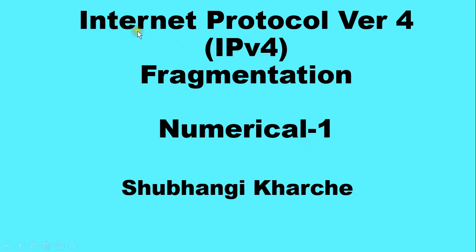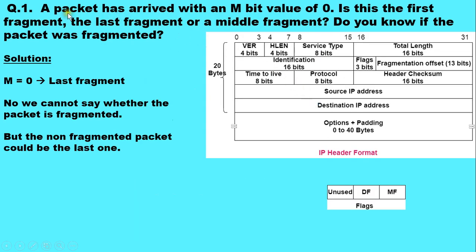Hello everyone, in this video I am going to explain an example on Internet Protocol version 4 fragmentation. A packet has arrived with an M bit value of 0. Is this the first fragment, the last fragment, or a middle fragment? Do you know if the packet was fragmented?